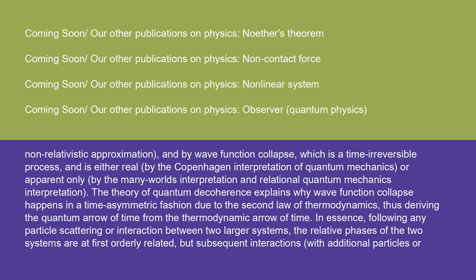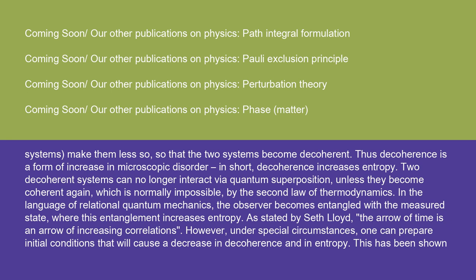In essence, following any particle scattering or interaction between two larger systems, the relative phases of the two systems are at first orderly related, but subsequent interactions with additional particles or systems make them less so, so that the two systems become decoherent. Thus decoherence is a form of increase in microscopic disorder — in short, decoherence increases entropy. Two decoherent systems can no longer interact via quantum superposition unless they become coherent again, which is normally impossible by the second law of thermodynamics. As stated by Seth Lloyd, 'the arrow of time is an arrow of increasing correlations.'